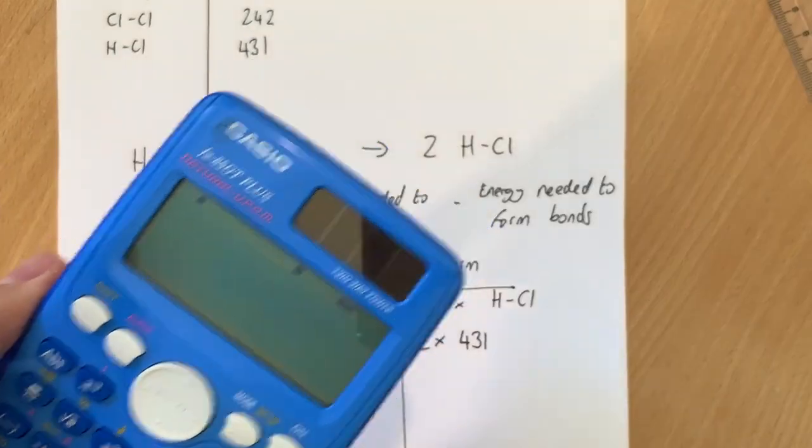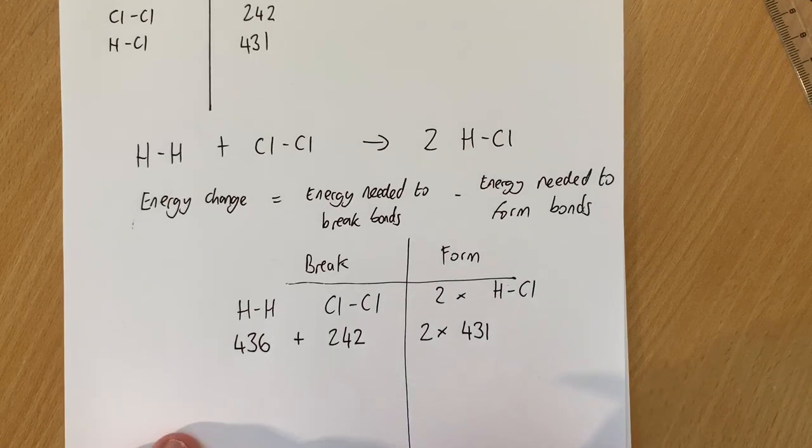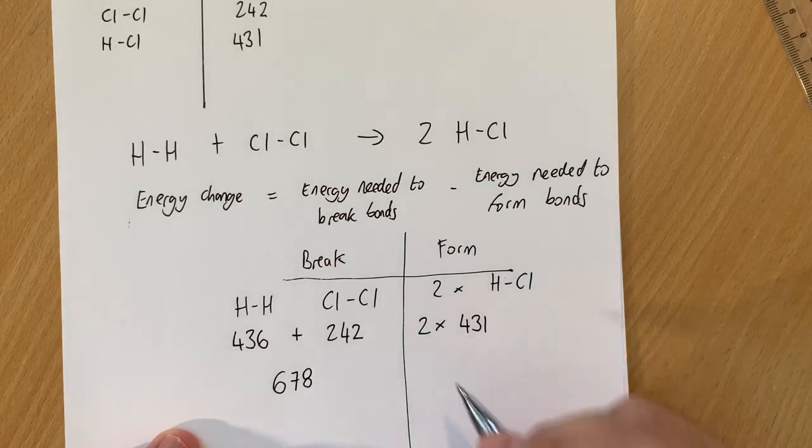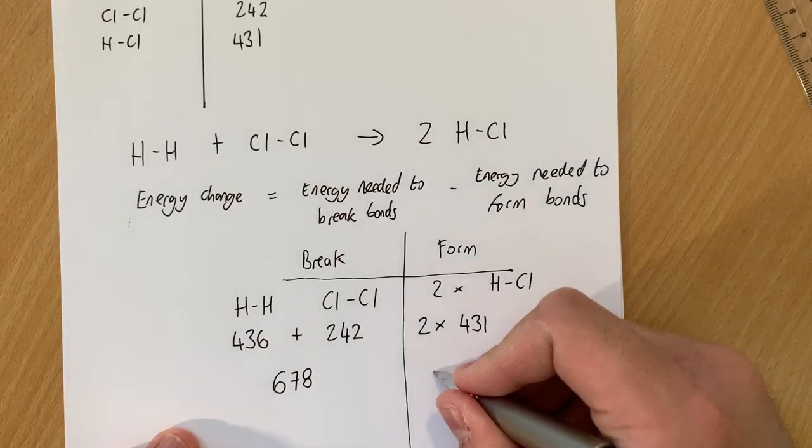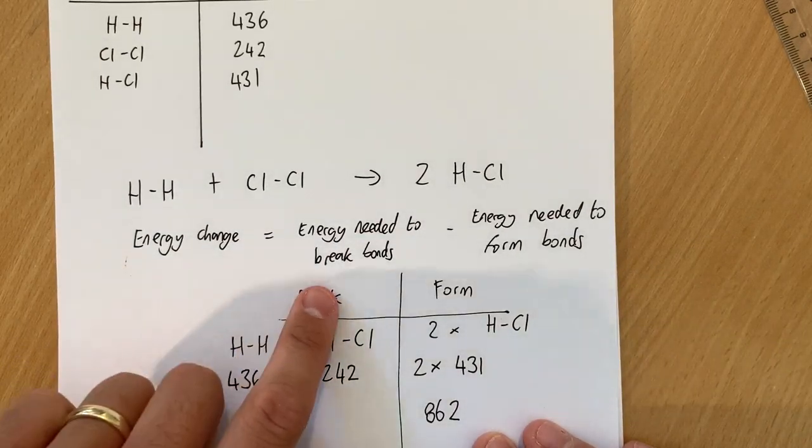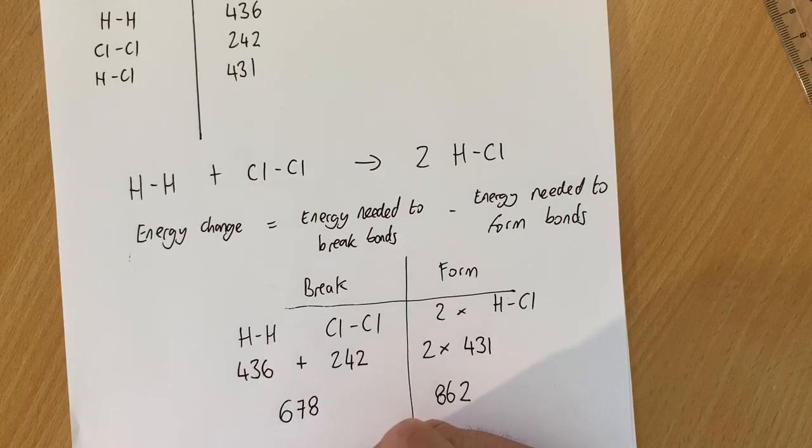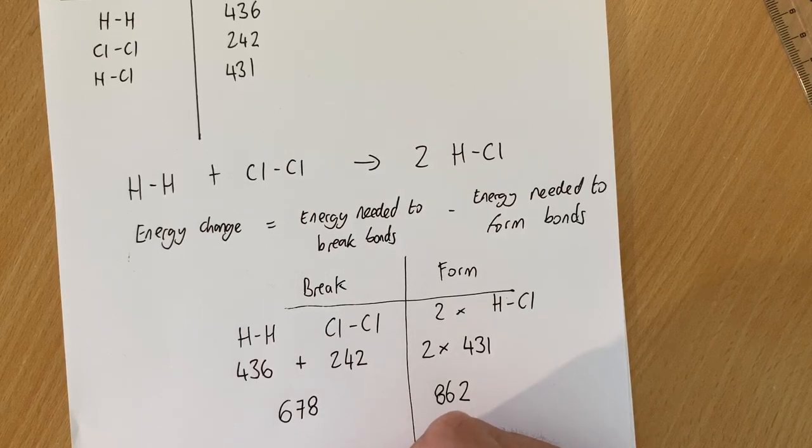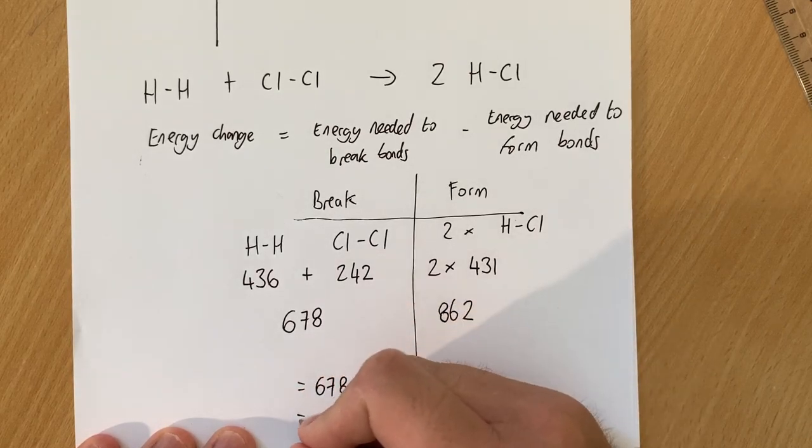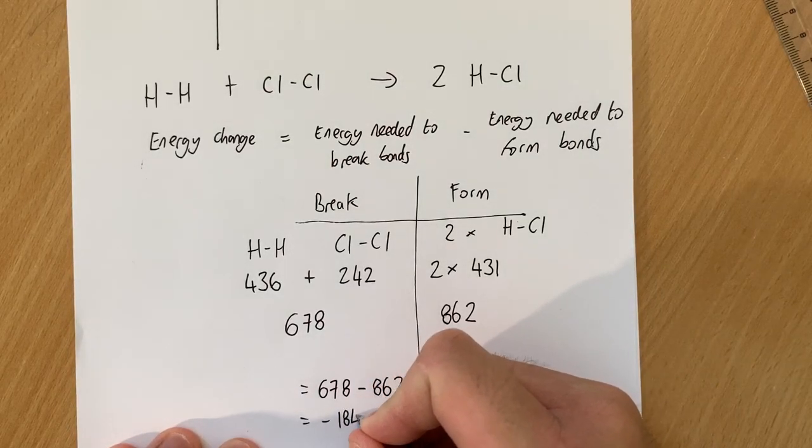And on this side we have got 2 lots of H-Cl which is 2 lots of 431. We then with our trusty calculators add the two together, so 436 and 242 to get a total on the left hand side of 678. And on the right hand side, 2 lots of 431 is 862. So going back to the equation here, the energy change is the energy needed to break the bonds minus the energy needed to form the bonds. What we're going to do is 678 minus 862.